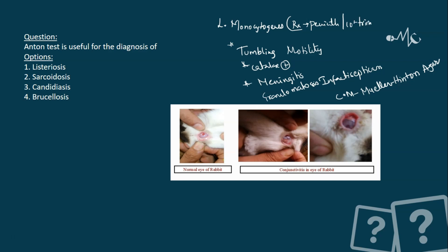Overall, the treatment after diagnosis is either penicillin or cotrimoxazole — these are the two antibiotics which can be used in listeriosis. Anton test is used for the diagnostic purpose of listeriosis.